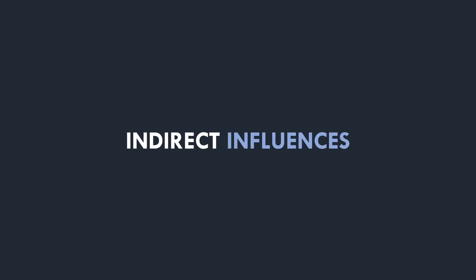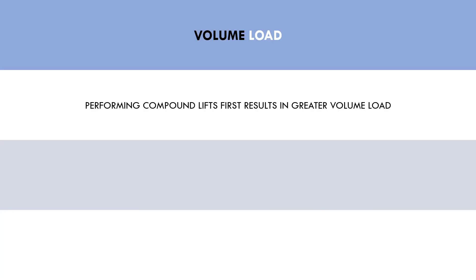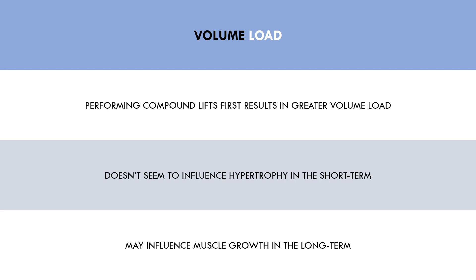So as we have established, the order of exercises in a training session doesn't seem to have a significant direct influence on muscle growth. However, exercise order may influence long-term hypertrophy outcomes through indirect mechanisms. The first is volume load — sets times reps times load. Generally, if larger muscle groups are trained with compound lifts earlier in the session, more total volume load will be performed. This is because if a smaller isolation lift is performed before a compound lift involving that muscle, that muscle will be more fatigued and limit compound exercise performance. While we didn't see a significant difference using a pre-exhaustion strategy in the short term, limiting volume load could potentially limit long-term hypertrophy outcomes.